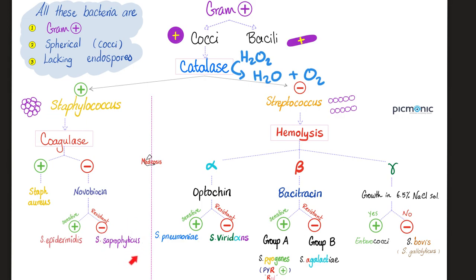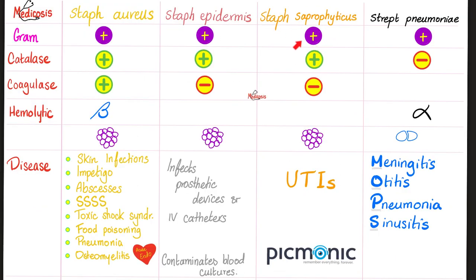Staph saprophyticus is gram positive, catalase positive, coagulase negative — since it's a staph, they cluster together and they are purple because they are gram positive. Diseases caused by Staphylococcus saprophyticus are urinary tract infections. Infect the urethra — urethritis. The urinary bladder — cystitis. The ureters — ureteritis. The renal pelvis and nephrons of the kidney — pyelonephritis.